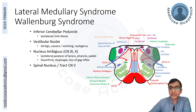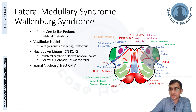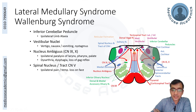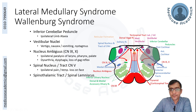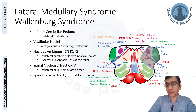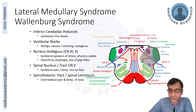The spinal nucleus of the trigeminal nerve receives pain and temperature sensations from the ipsilateral half of the head and neck, so there will be ipsilateral loss of pain and temperature. The spinothalamic tract — more prominently the anterior spinothalamic tract — carries pain and temperature from the contralateral half of the body, as it had already crossed the midline near its entry point, leading to contralateral loss of pain and temperature.